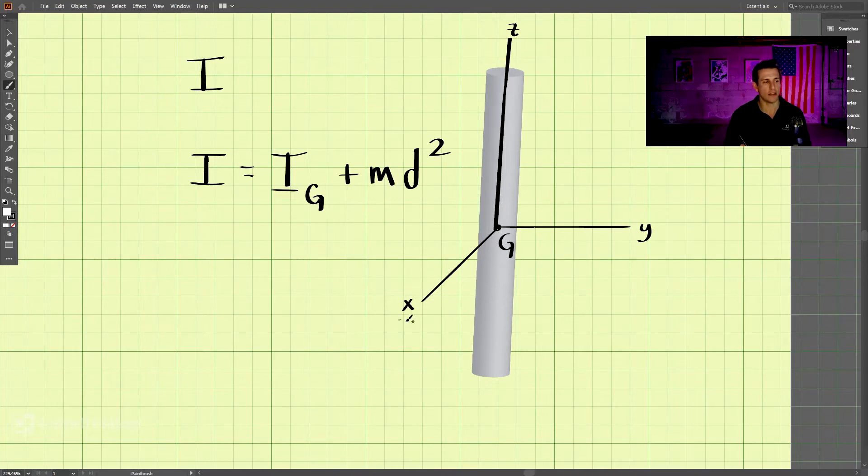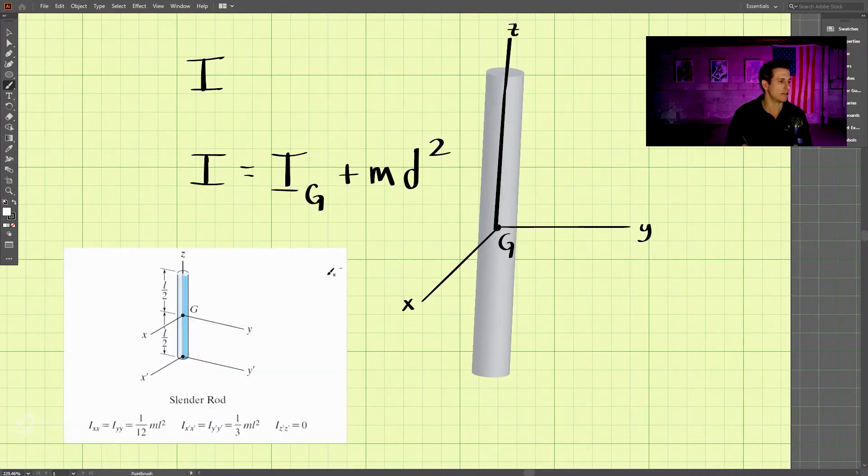So if we're rotating about the x-axis here, which is also about the center of gravity, we can take a look in the back of the book, and what we find is this equation here for about the x-axis, which is 1/12 ml squared. So about the center of gravity around the x-axis, we're going to have 1/12 ml squared. And that will be the mass moment of inertia.